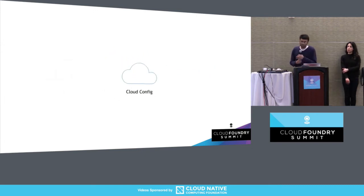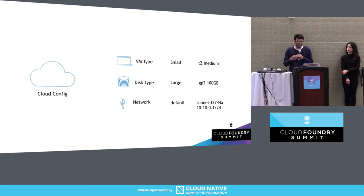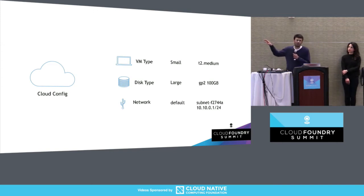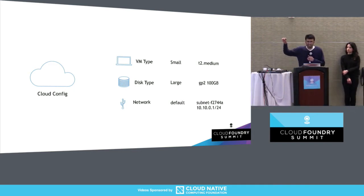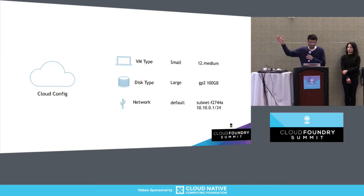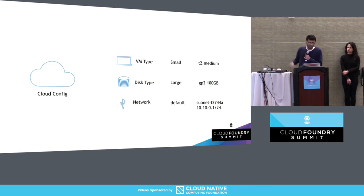The next piece of information needed is the cloud configuration — a large mapping file that maps abstract resource types to specific types or resources on the IaaS. This file is normally written by a cloud operator who has all the information about available resources. For example, in an AWS environment, an abstract VM type called 'small' maps to T2 medium on AWS, and 'disk large' maps to a hundred gigabyte disk. This applies to networks and all IaaS-specific resources.